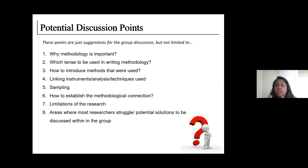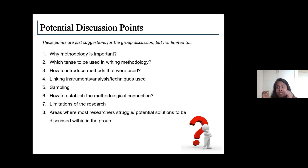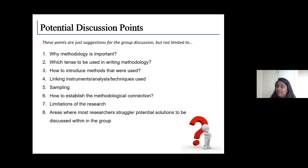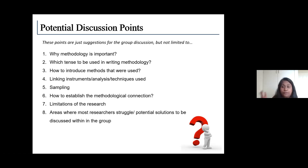Depending on the research problem you are exploring, if the population size is small — for example, people who have experienced a particular disaster — finding that limited group itself is a sampling process. In that case, we are going to select all respondents who have experienced the particular research problem or research area. So when it says sampling, in some research it may actually be referring to the respondents themselves who have experienced or are familiar with the field you are exploring.